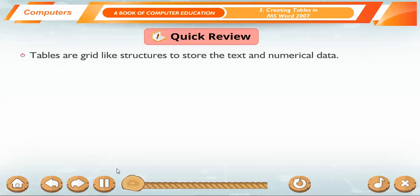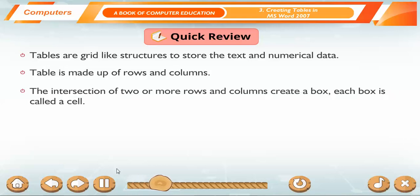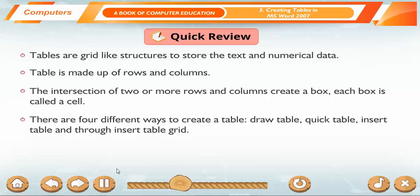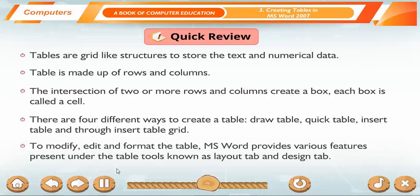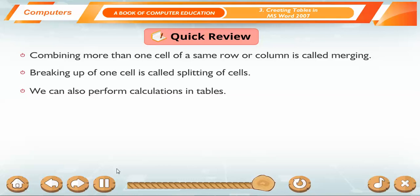Quick Review. Tables are grid-like structures to store the text and numerical data. Table is made up of rows and columns. The intersection of two or more rows and columns create a box. Each box is called a cell. There are four different ways to create a table: Draw Table, Quick Table, Insert Table, and through Insert Table Grid. To modify, edit and format the table, MS Word provides various features present under the table tools known as Layout Tab and Design Tab. Combining more than one cell of a same row or column is called Merging. Breaking up of one cell is called Splitting of cells. We can also perform calculations in tables.